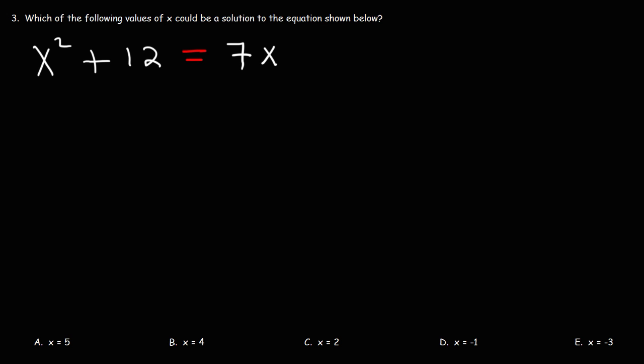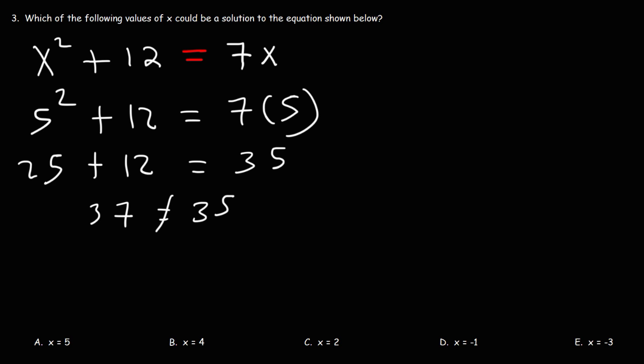Let's try answer choice A. So we're going to replace x with 5. And we're going to see if the left side has the same value as the right side of the equation. If the values are the same, then you have the solution. If the values are different, then it's not a correct solution. 5 squared is 25, and 7 times 5 is 35. 25 plus 12 is 37. 37 does not equal 35, which means answer choice A is not a solution. So let's try another one.